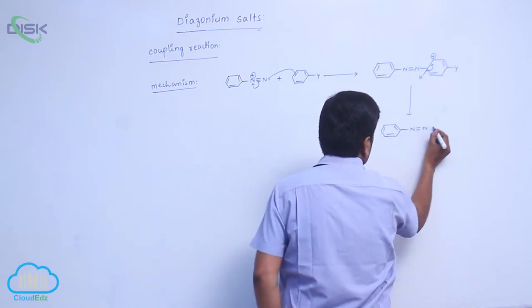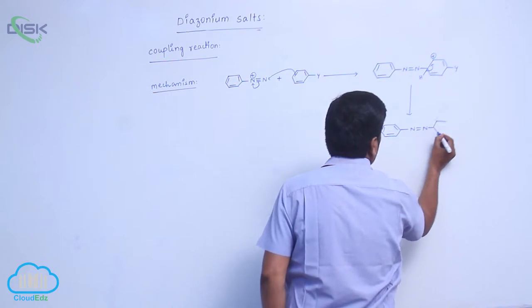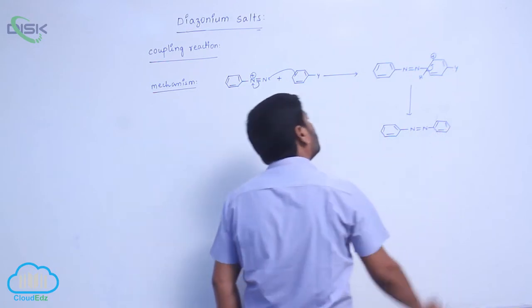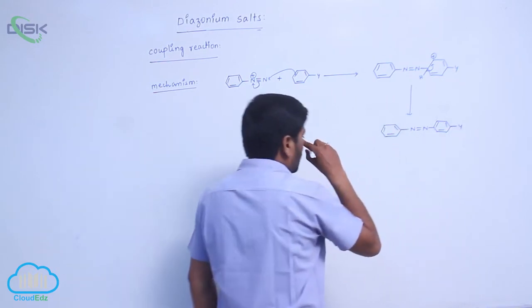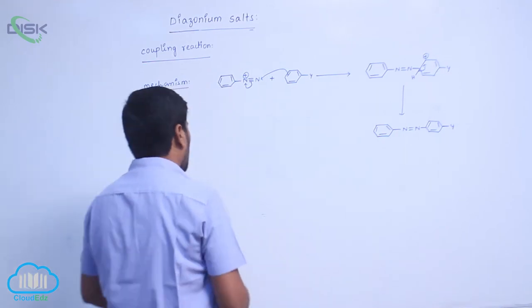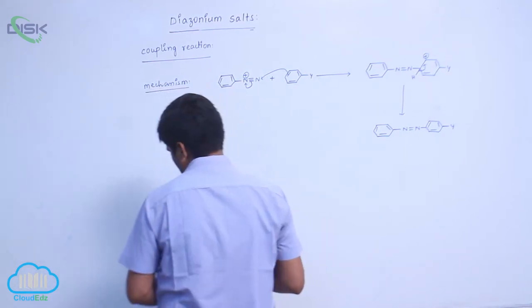To form a coupling product. N double bond N R, which group? Y group. So Y equals to electron withdrawing group.